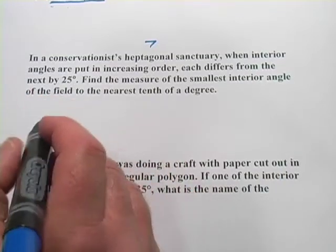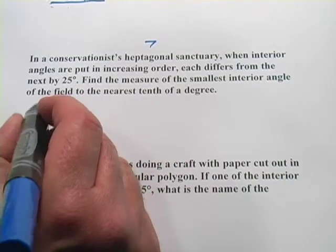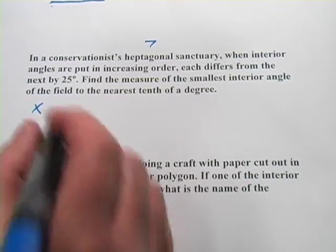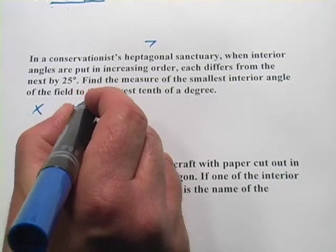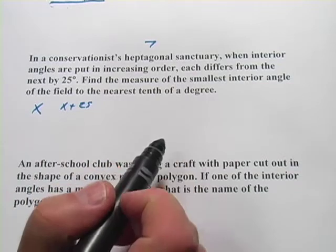What that means is the first angle is some measure, we don't know, we'll call it x. The next angle up is x plus 25. And so on and so on, for all seven sides.